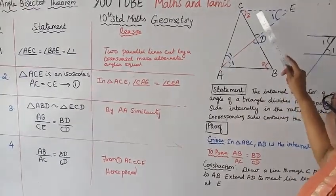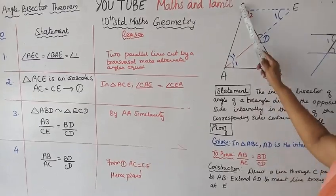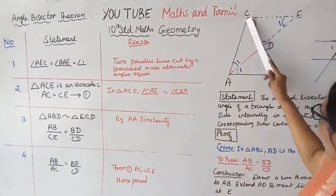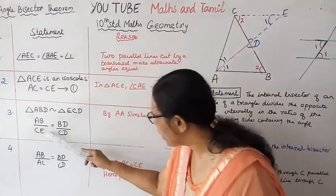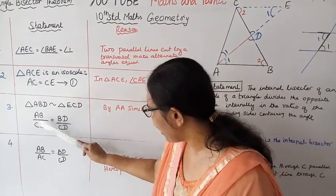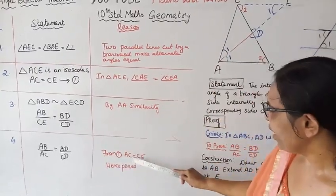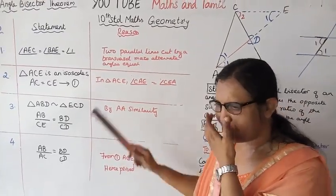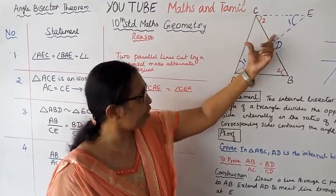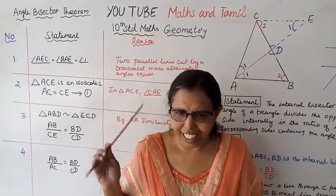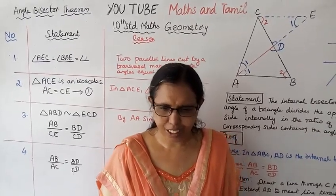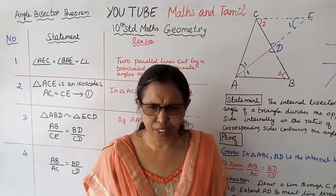Now, AB/AC = BD/CD. Since AC = CE (isosceles), we substitute CE with AC. From step one, AB/AC = BD/CD. Hence the angle bisector theorem is proved. This channel helps you get 100 marks. Subscribe to the channel and click the bell button.